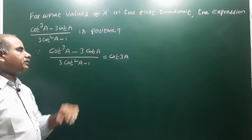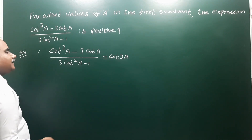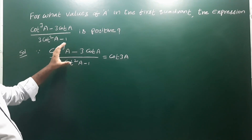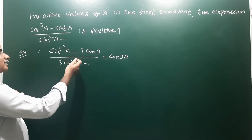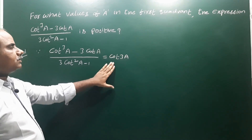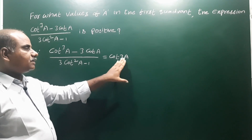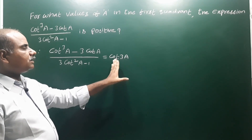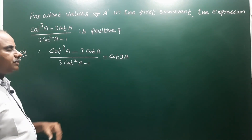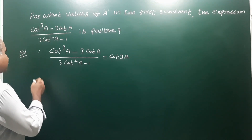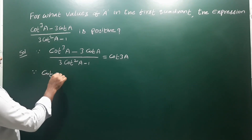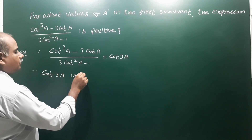By observing, this expression is nothing but cot 3a — it is the formula for cot 3a. Since cot 3a is positive, we have to find the values of 'a' for which this expression is positive in the first quadrant. This expression is equal to cot 3a. So we need to find for what values of 'a' is cot 3a positive.